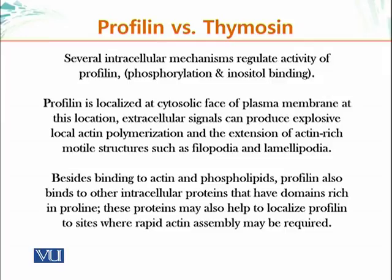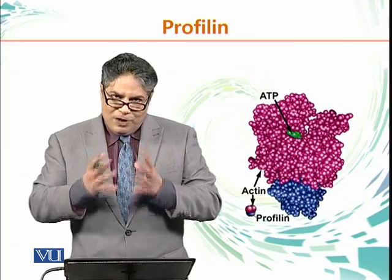At this location, extracellular signals can produce explosive local actin polymerization by activating profilin, leading to the extension of actin-rich motile structures such as filopodia and lamellipodia. If a cell receives a positive signal at a particular site, profilin is activated, actin polymerizes very quickly, and the plasma membrane is pushed toward the signal, forming these structures. Besides binding to actin and phospholipids, profilin also binds to intracellular proteins with proline-rich domains, which help localize profilin to sites where rapid actin assembly is required, enabling controlled polymerization.